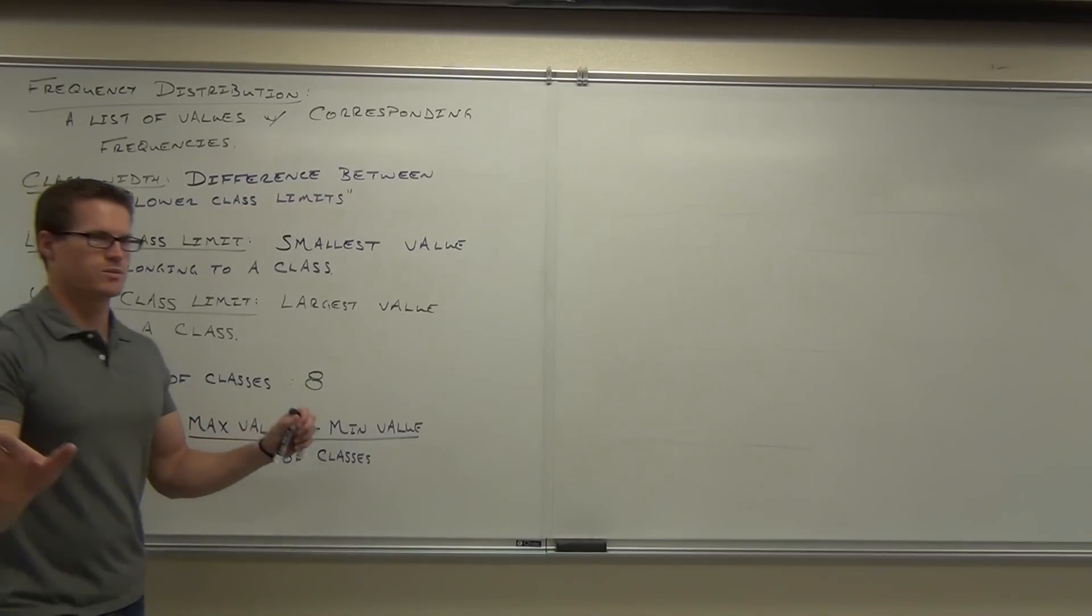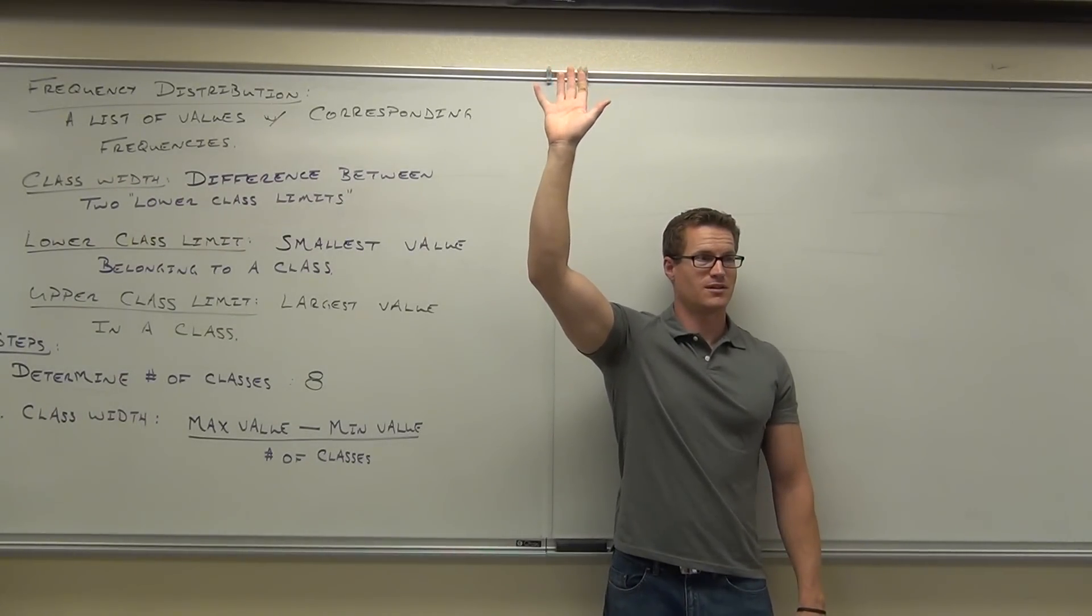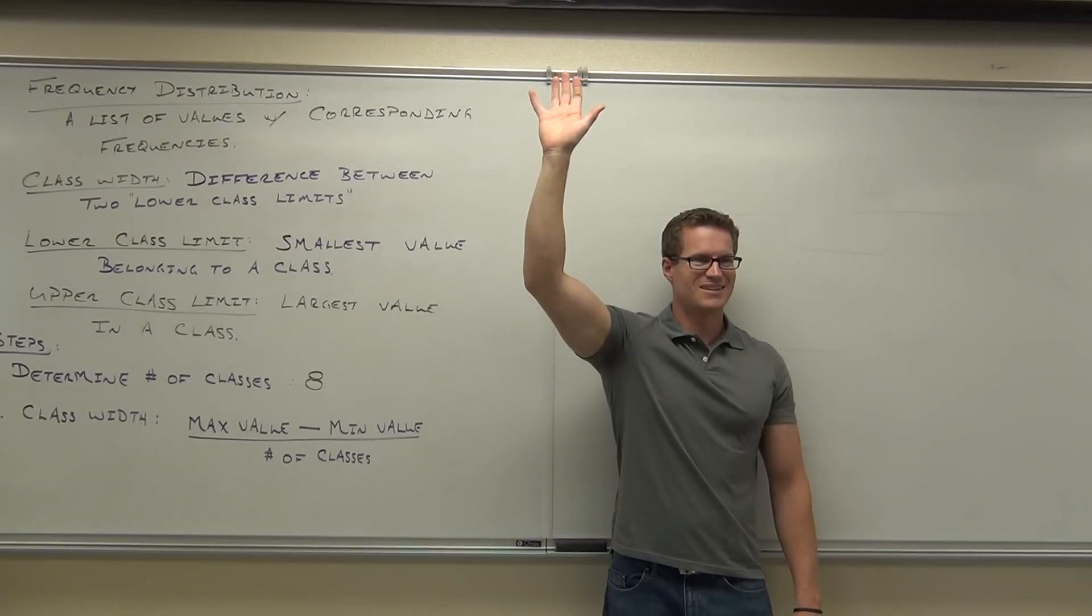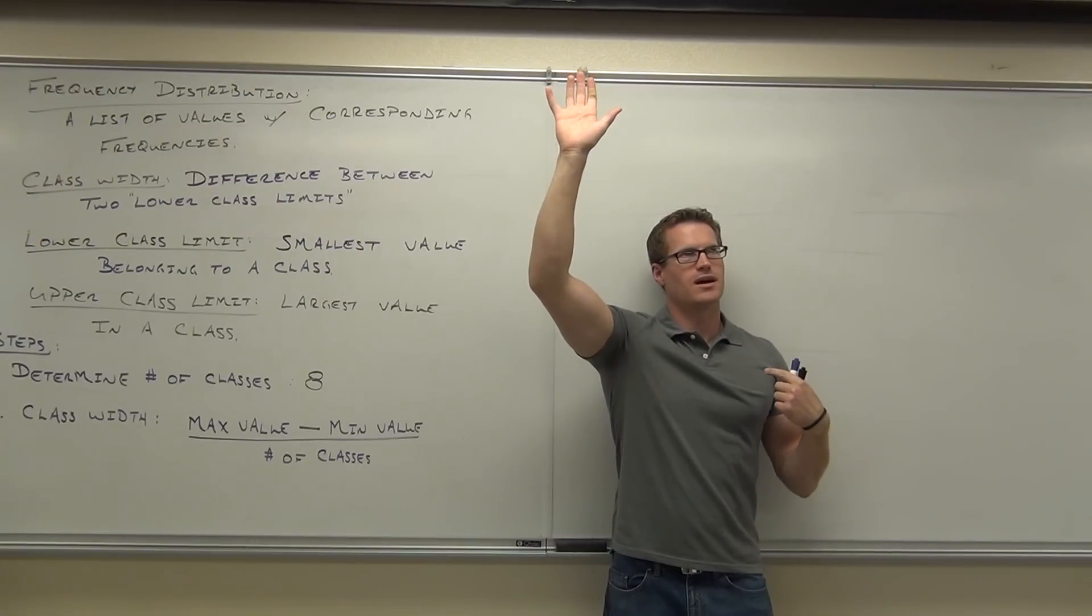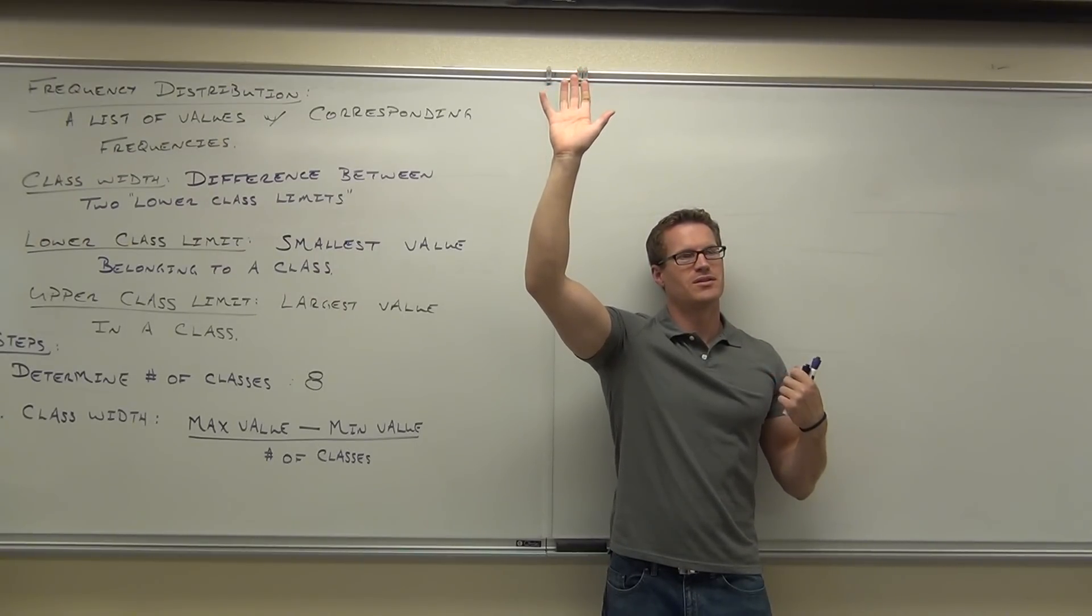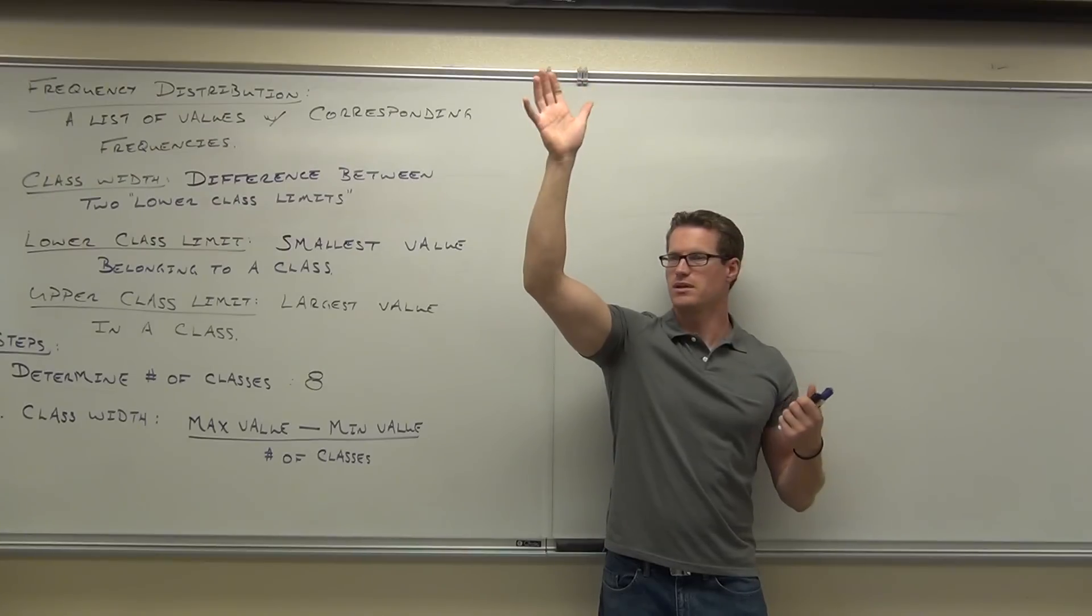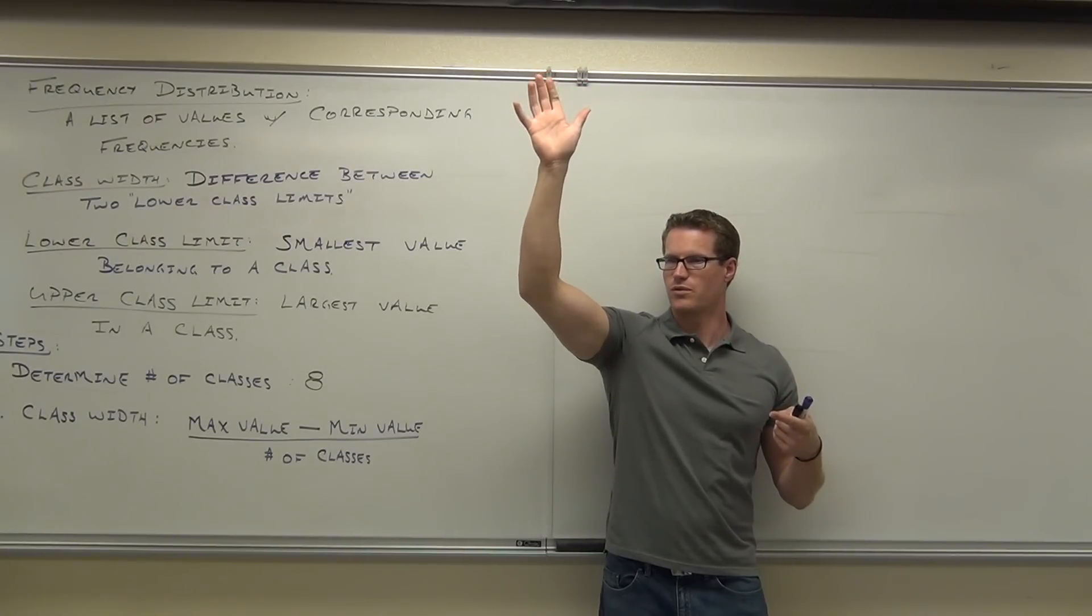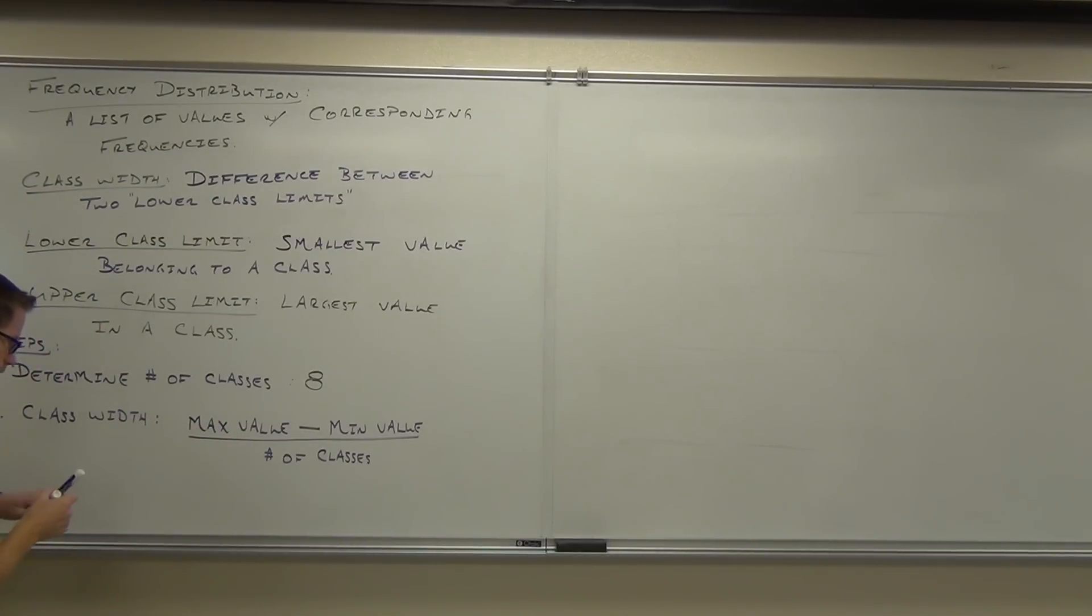Hopefully no one's worried too much about their age. Are there any 17-year-olds in here? 16? 15? Okay, good. 18? Okay, good. Do we have anyone over 50? 45? 40? Do you mind? No, 44. So 44 is our max value, minus 18 is our minimum value, and we're going to divide by the number of classes. How many classes did I pick here? Okay, we're going to divide by 8.